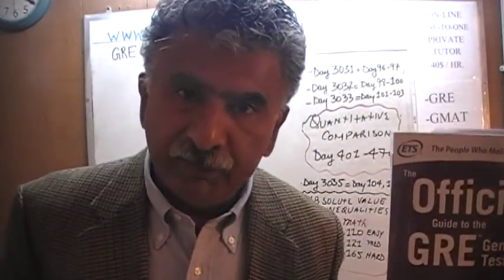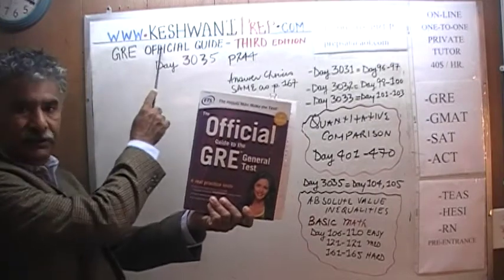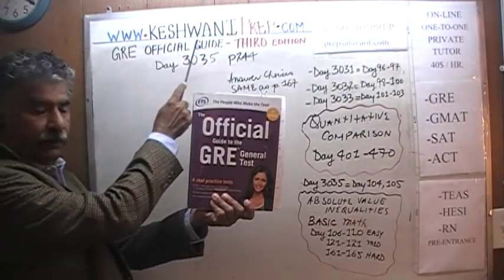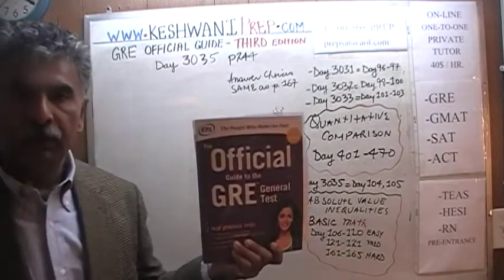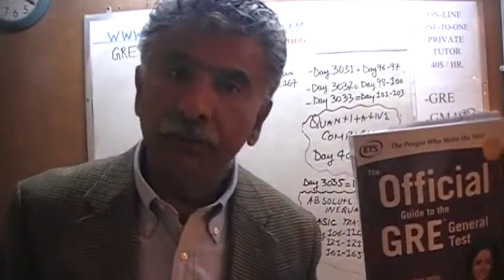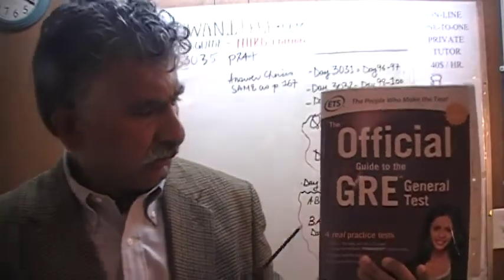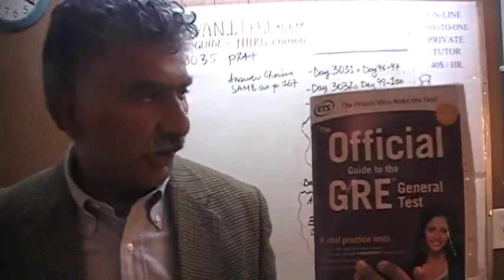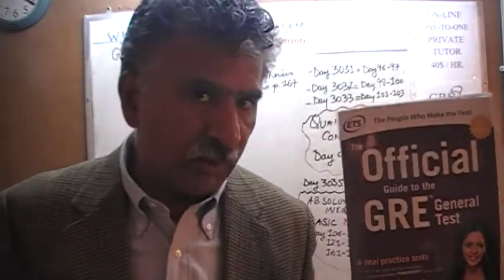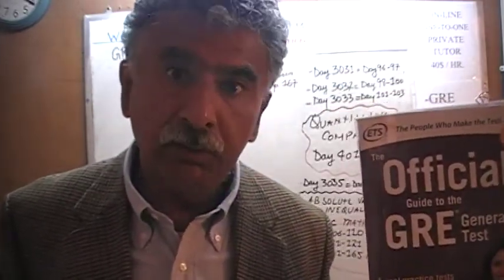Hello, my name is Keshwani — that's K-E-S-H-W-A-N-I. We are here because we want to prepare for the GRE. We have been solving math problems out of this book, the Official Guide to the GRE, the third edition. If you do not own this book already, purchase it immediately — you are going to need it.